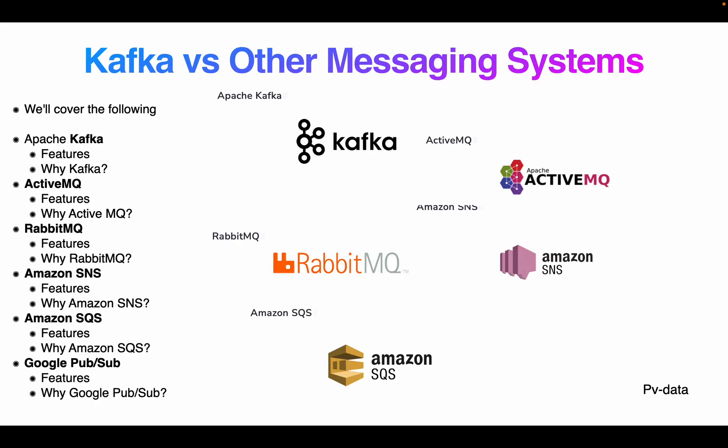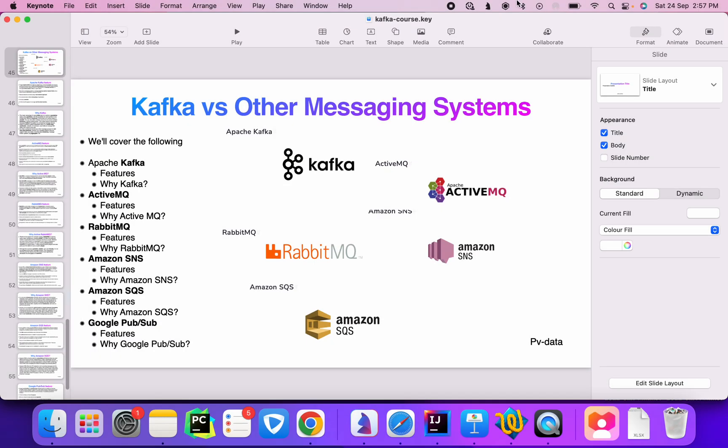Having covered Kafka, RabbitMQ, ActiveMQ, Amazon SNS, Amazon SQS, and Google Pub/Sub, from personal experience I would go with Kafka first, then RabbitMQ, then Google Pub/Sub. Based on your requirements, please choose accordingly. Please like and subscribe to the channel. Thank you for watching.